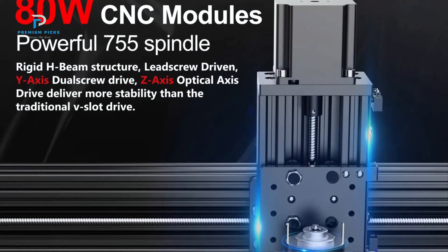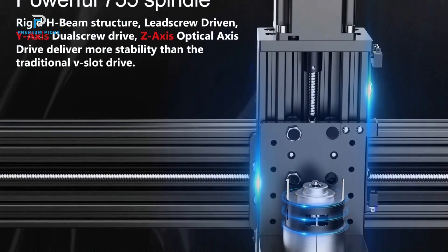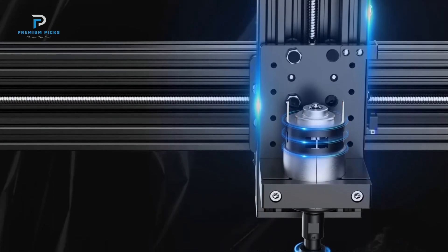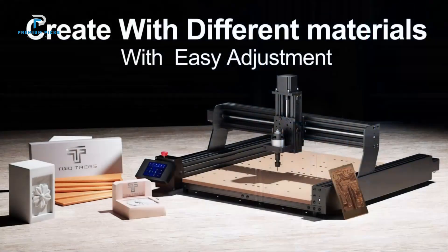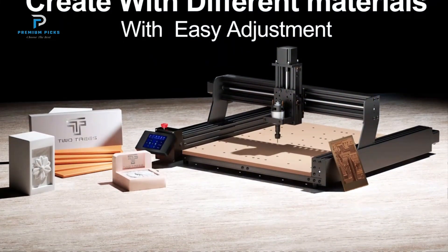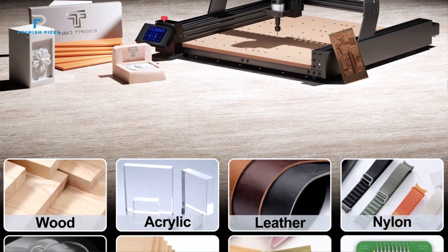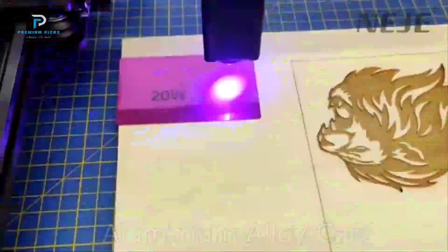Generous work area with a 460x460x80mm work area, the TTC450 provides ample space for a variety of engraving and cutting projects. This large workspace gives users more flexibility to create intricate designs and handle larger materials without constant repositioning.